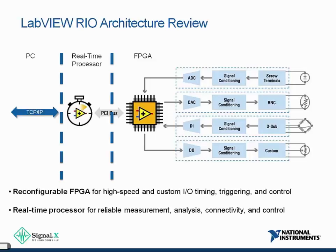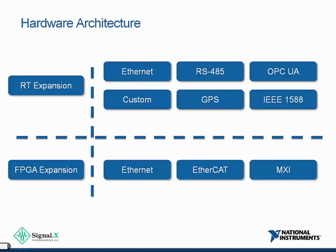The primary choice when talking about distributed control is: where do I break that link, and what is my expansion method? Am I going to have an FPGA distributed node that is highly deterministic but relatively simplified? Or am I going to embed a full-fledged real-time processor out at each node? To evaluate that decision, let's look at FPGA expansion chassis options: Ethernet RIO, EtherCAT RIO, and MXI RIO expansion — each with a different set of pros and cons.